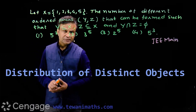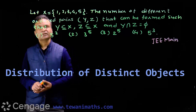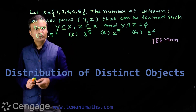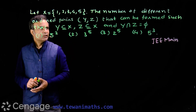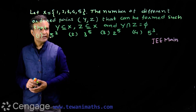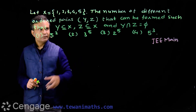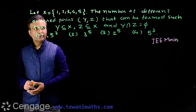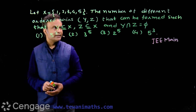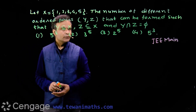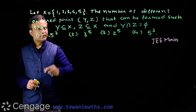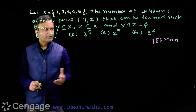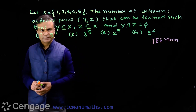Now we have this question asked in JEE Main exam. The question is: let set X be {1, 2, 3, 4, 5}. Find the number of different ordered pairs of sets Y and Z, where Y and Z are sets such that Y is a subset of X, Z is a subset of X, and Y intersection Z is the null set.